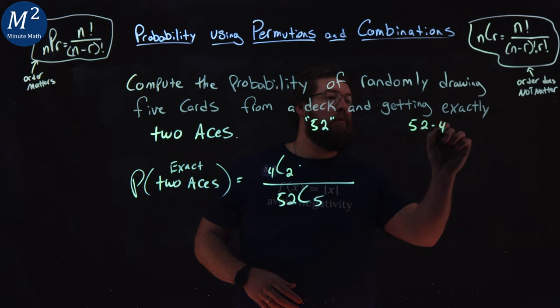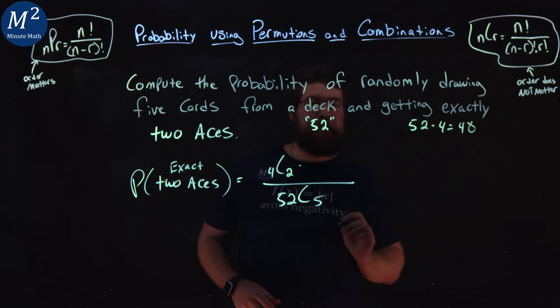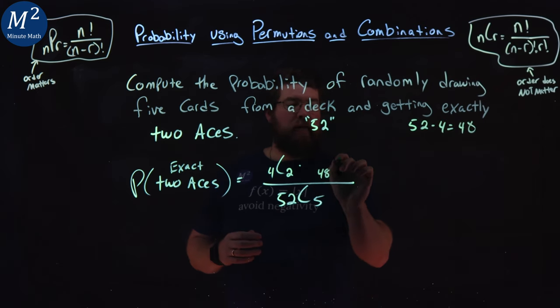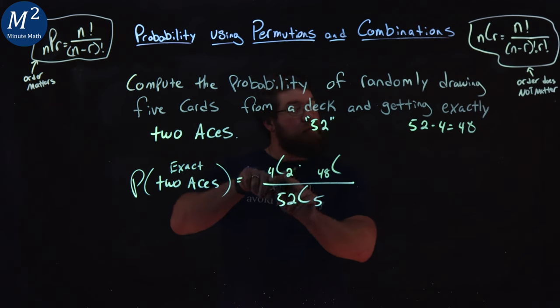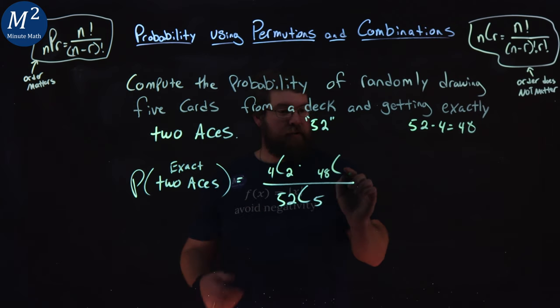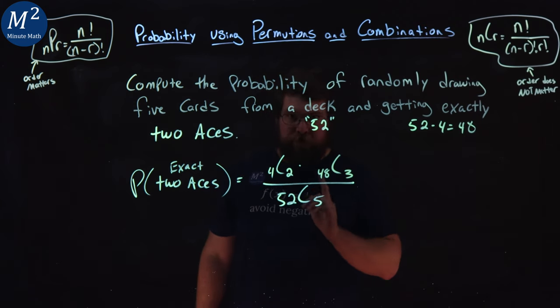That's 52 minus four, which is 48. So there's 48 cards left that we need to choose from. And we've already chosen two that were correct, so we're choosing three.